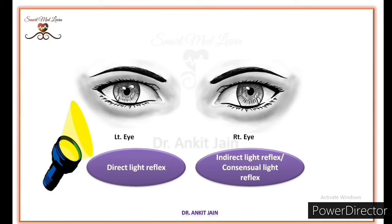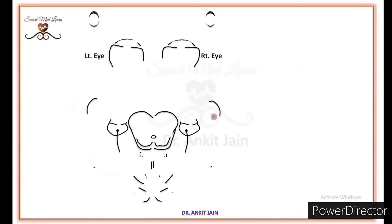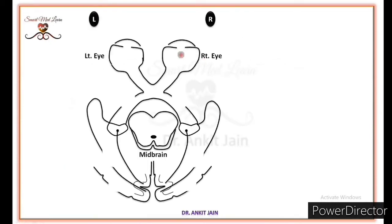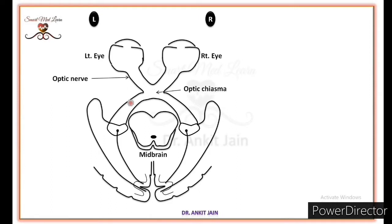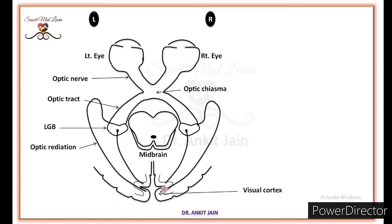Now we discuss the pathway of light reflex. First we draw the schematic diagram of the visual pathway. This is the optic nerve. Here is the optic chiasma. This one is the optic tract. This one is the lateral geniculate body, and here is the optic radiation, and this one is the visual cortex.